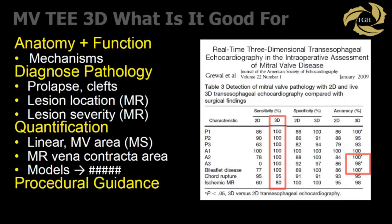So what's it good for? What do people do with their 3D data sets? For some colleagues, it's just the ability to obtain a 3D data set — that's the pinnacle of the day. For others, it's what can we use it for? We can use it to understand mechanisms — why the patient has a particular pathology. It's designed to help diagnose various pathologies, including prolapse, clefts, the location of mitral regurgitation, and the severity of mitral regurgitation.